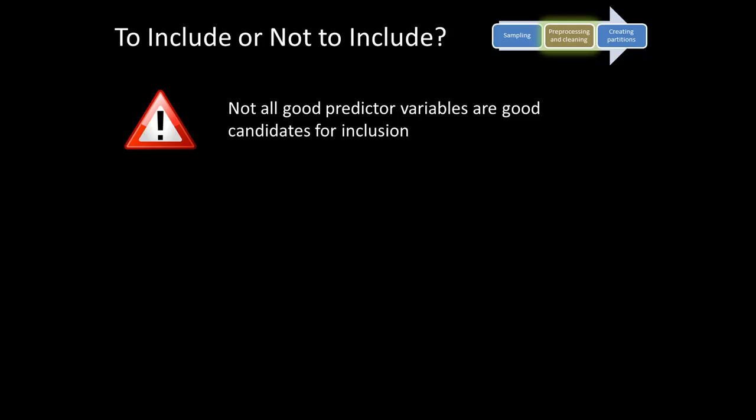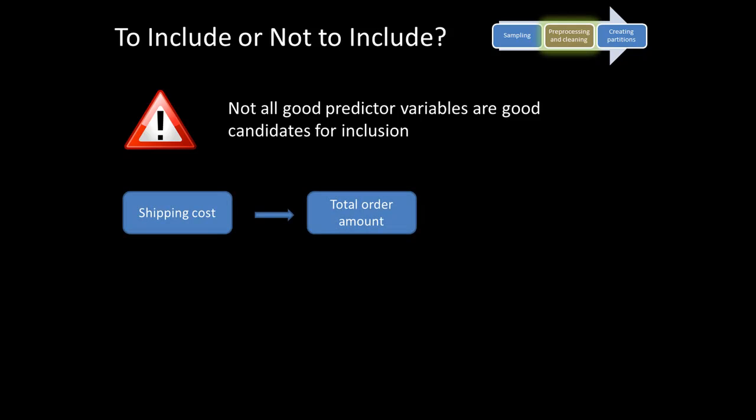Let's understand this with an example: shipping cost. Let's say you're trying to predict the total order amount in some setting, and clearly you find from your historical data that shipping amount — shipping cost — is a really good predictor of total order amount. Should you include it?